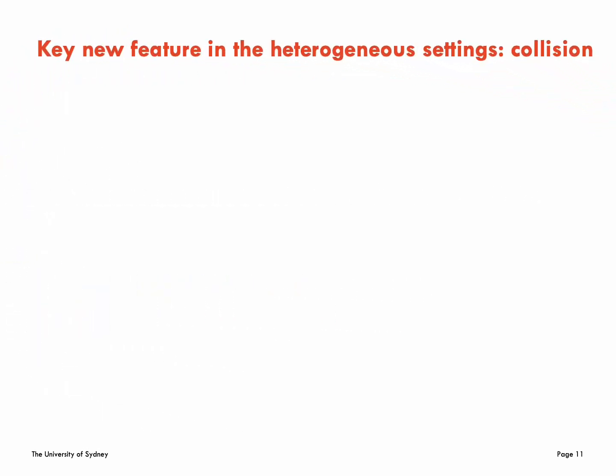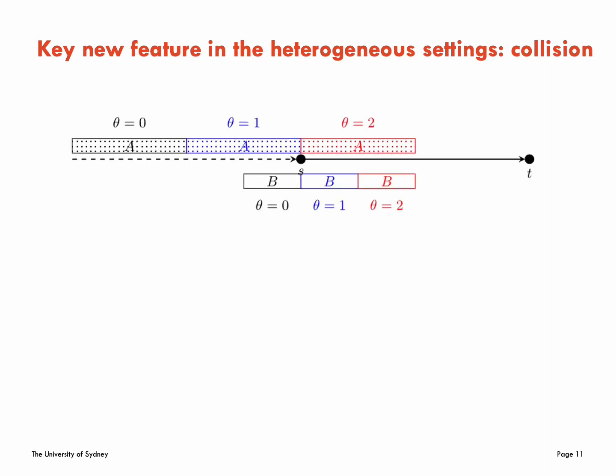A key new feature of the heterogeneous model is that because of the differences in speeds, it is possible for a faster commodity to catch up with a slower one in the middle of an edge, therefore causing a violation of the capacity constraint. We call that a collision, where flows of multiple commodities sent at different times meet at the same point within the edge.